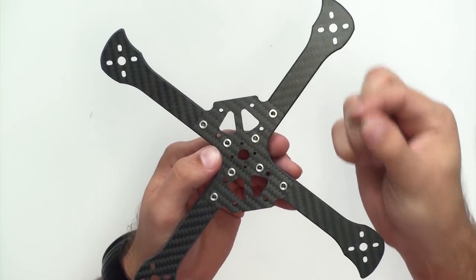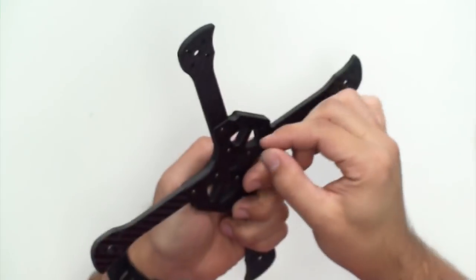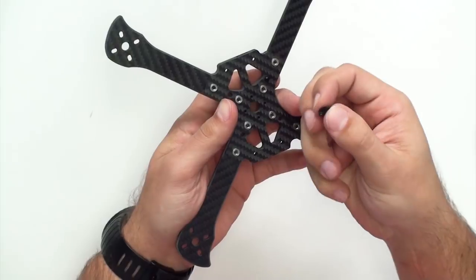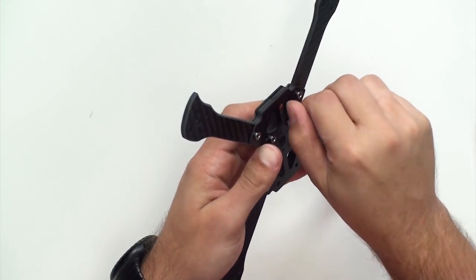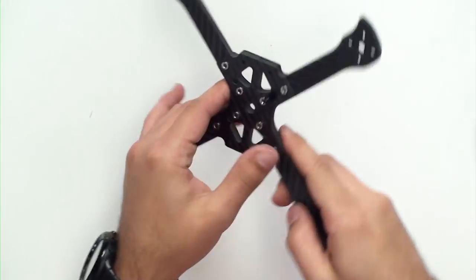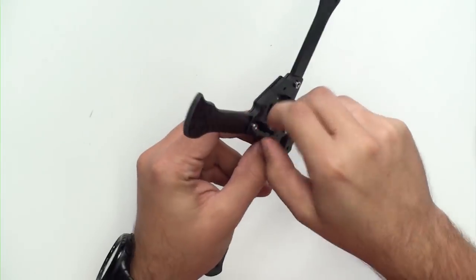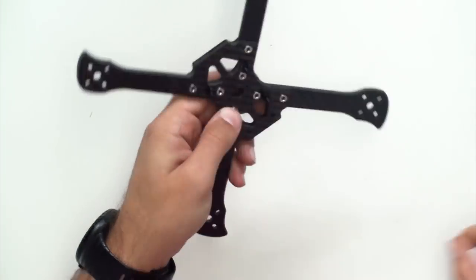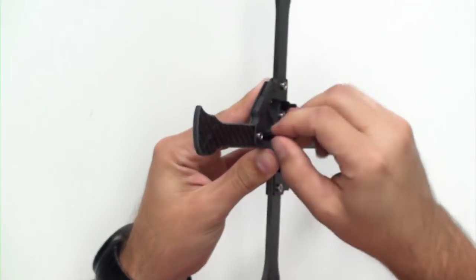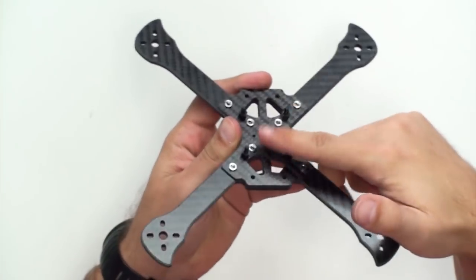Go ahead and take four of the longer bolts and put them through the holes for the flight controller to mount to. Grab a black standoff and thread that on, and repeat that three more times. Make sure those are all nice and snug. Should look just like that.